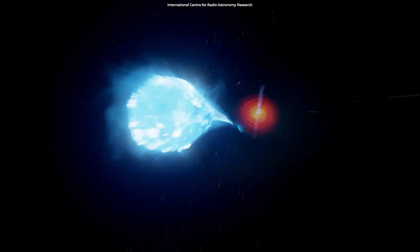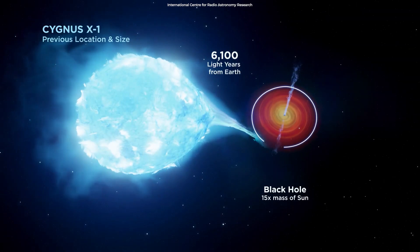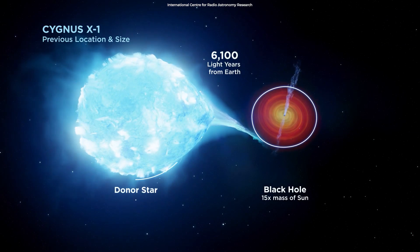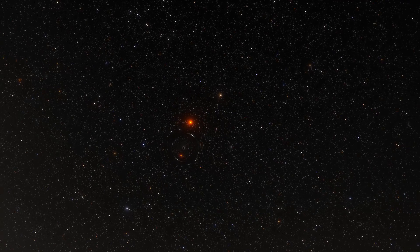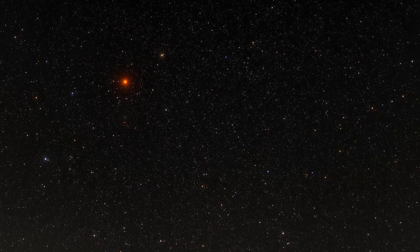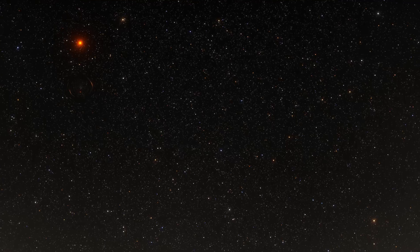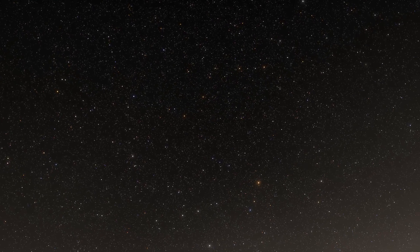The first black hole to be confirmed was Cygnus X-1, the brightest x-ray source in the Cygnus constellation. Since then, about 50 black holes have been discovered in systems where a normal star orbits a black hole. They are the nearest examples of about 10 million expected to be scattered through the Milky Way.